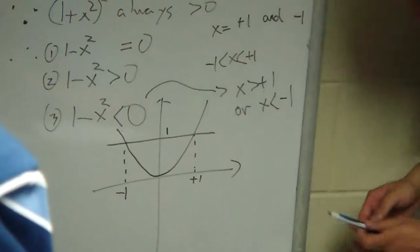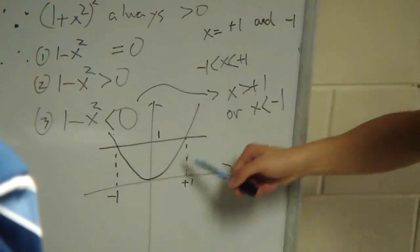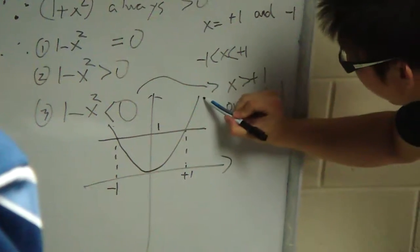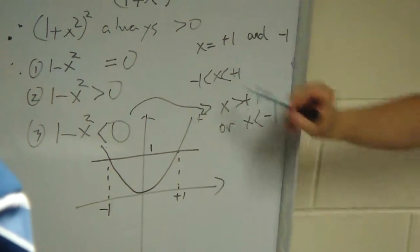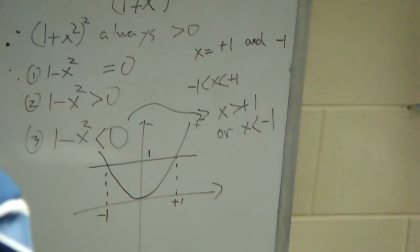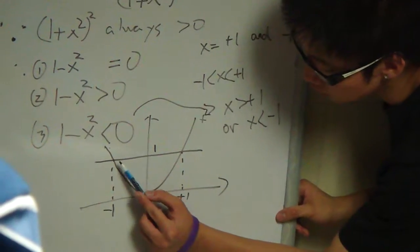This line will be y = 1, and then this will be x². So basically when 1 - x² = 0, which means 1 = x², we just find their intercept point here.